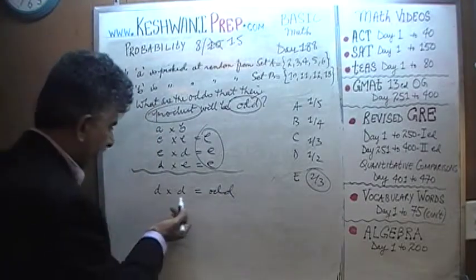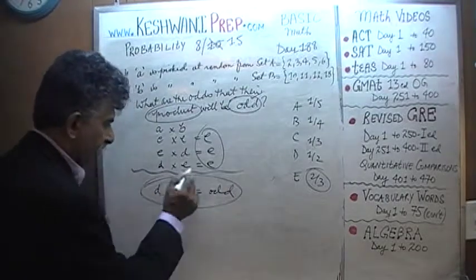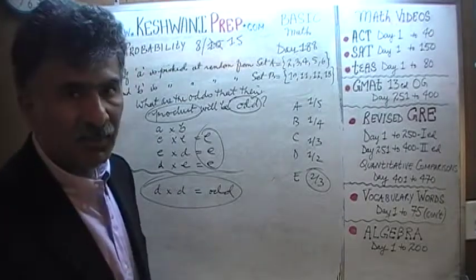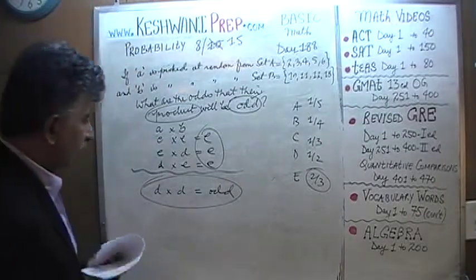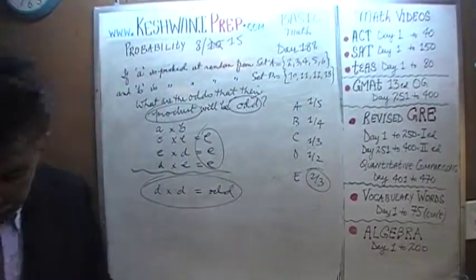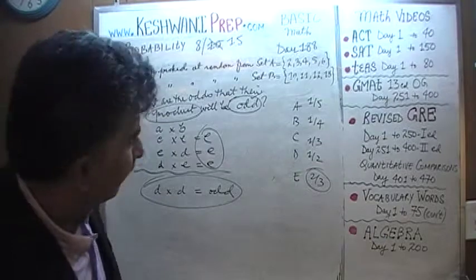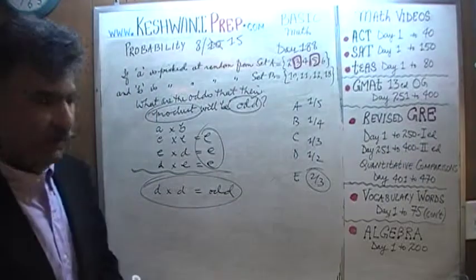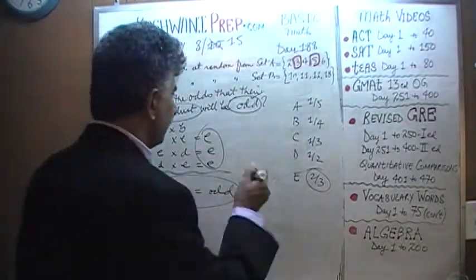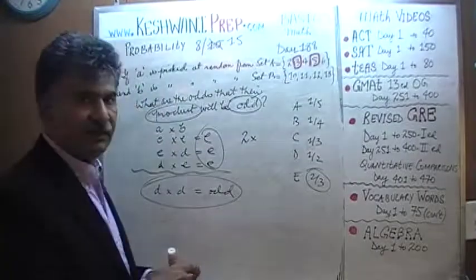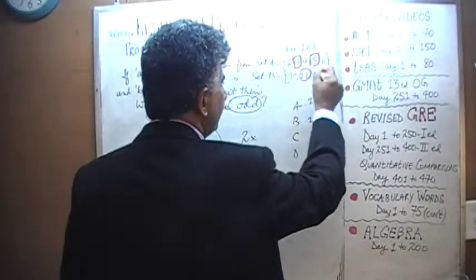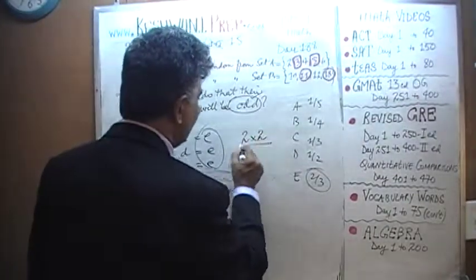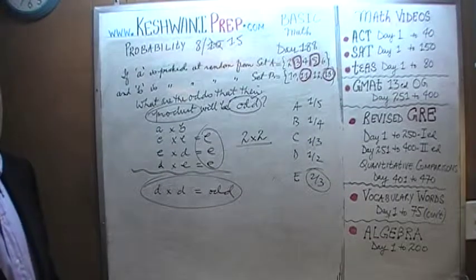For example, 3 times 5 is 15 — that's odd. That's the only way the product is going to be odd: when both happen to be odd numbers. How many different ways can we have an odd product? There are 2 odd numbers in set A — 3 and 5 — and 2 odd numbers in set B — 11 and 13. So there are only 4 possibilities that the product is going to be an odd number.